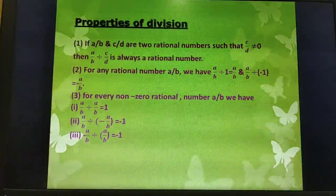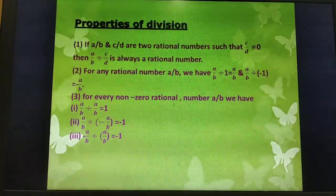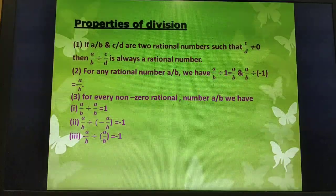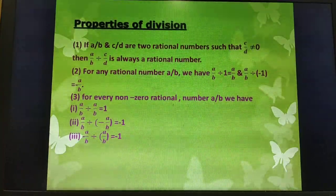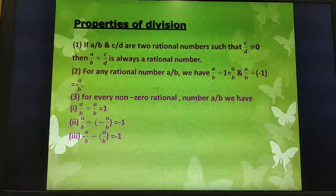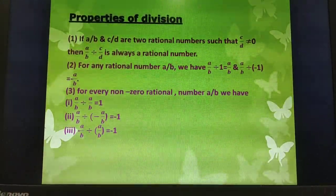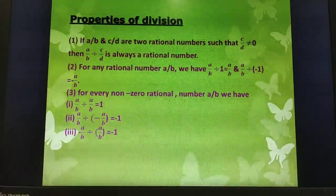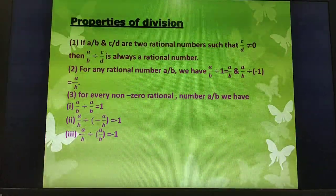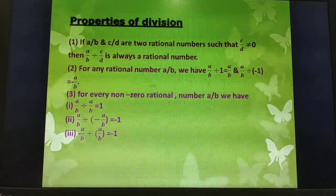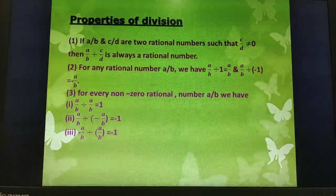Properties of division. First: if A/B and C/D are two rational numbers such that C/D ≠ 0, then A/B ÷ C/D is always a rational number. Second: for any rational number A/B, A/B ÷ 1 = A/B and A/B ÷ (-1) = -A/B. Third: for every non-zero rational number A/B, we have A/B ÷ A/B = 1, A/B ÷ (-A/B) = -1, and (-A/B) ÷ A/B = -1.